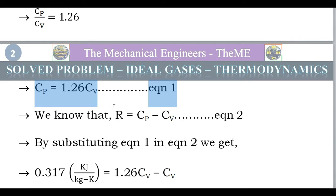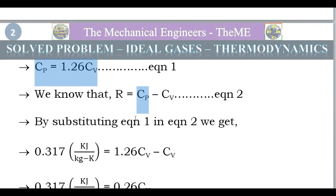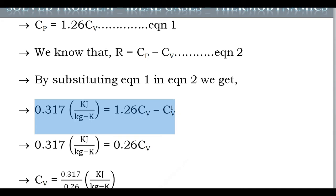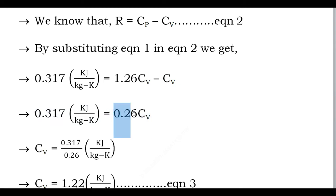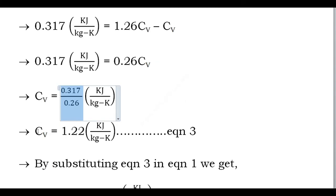Now we find Cv using the gas constant formula: R = Cp − Cv. R = 0.317 kJ/kg·K. Substituting Equation 1 (Cp = 1.26·Cv): 0.317 = 1.26·Cv − Cv = 0.26·Cv. Therefore Cv = 0.317 ÷ 0.26 = 1.22 kJ/kg·K. Consider this as Equation 3.